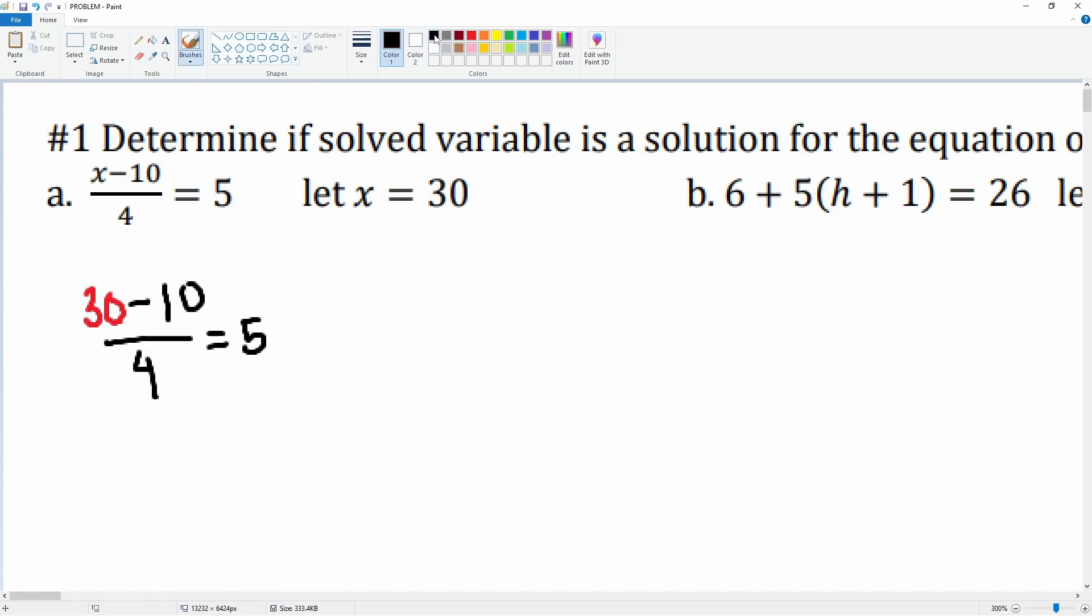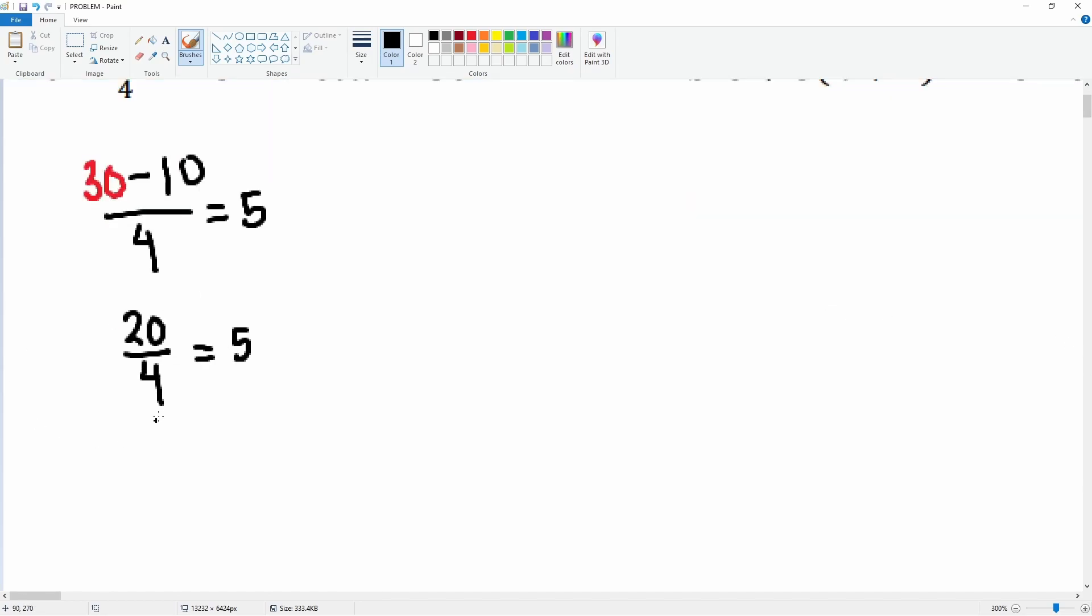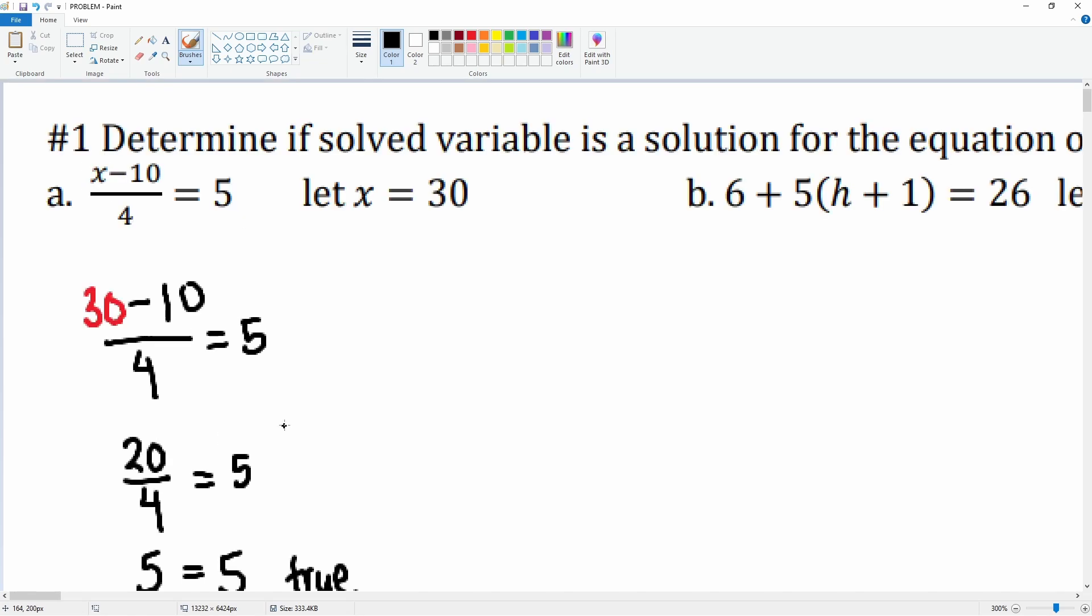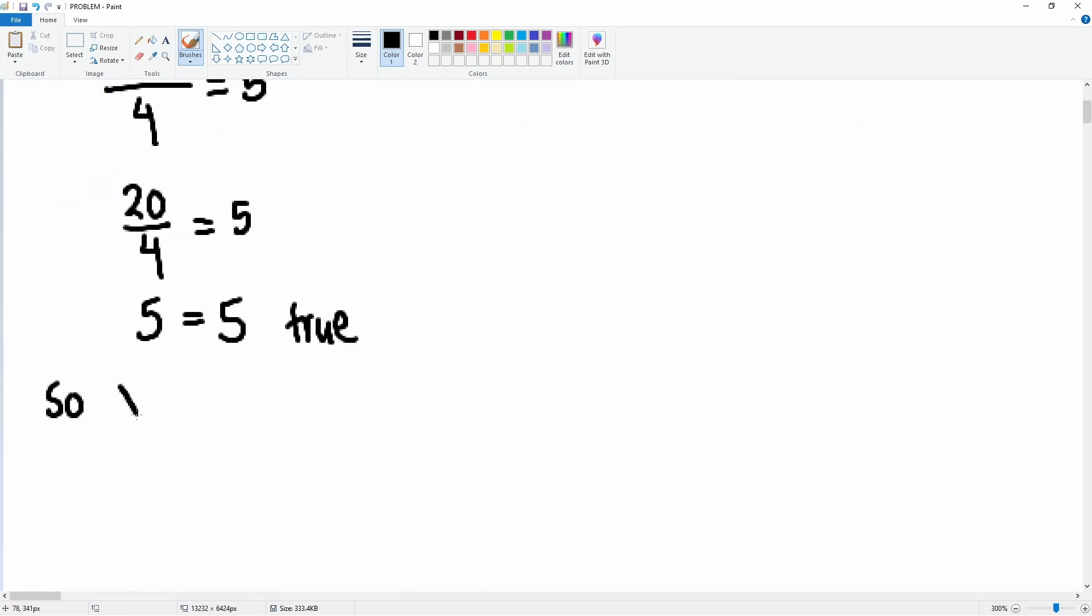Now we can simplify some left terms. 30 minus 10 becomes 20 divided by 4 is equal to 5. Then we have 20 divided by 4, which is 5, and that equals 5. This is true. So we can say that x equals 30 is a valid solution.